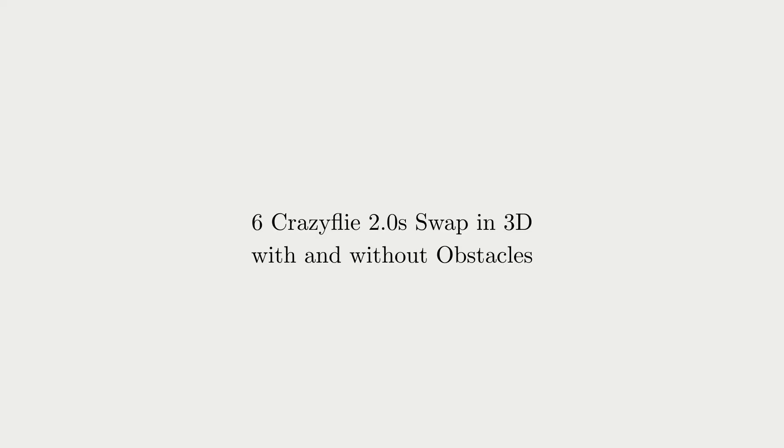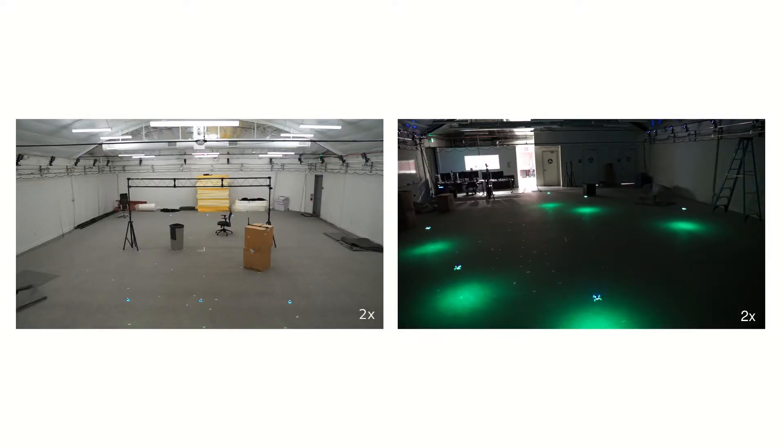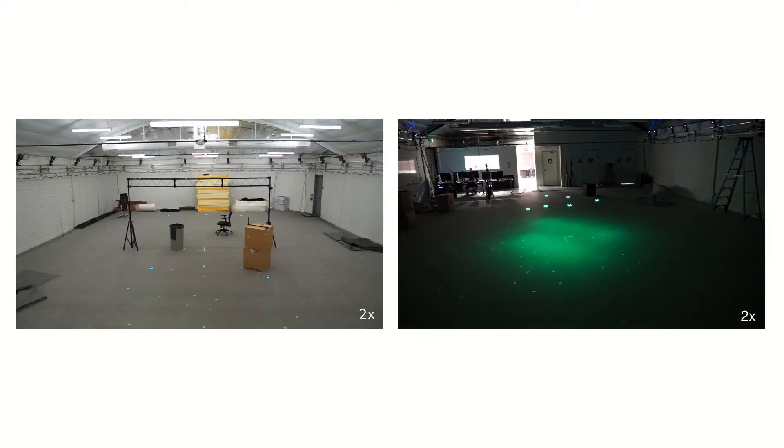We implement RLSS for CrazyFly 2.0s and run the algorithm in scenarios with and without obstacles. Robots at the opposite side of their arrangements are tasked with swapping positions. Desired trajectories are set to straight-line segments.